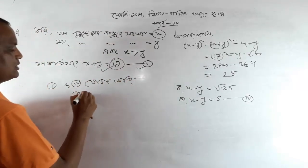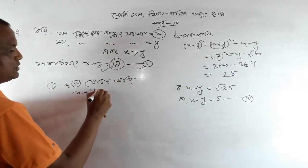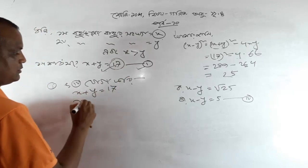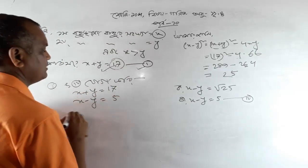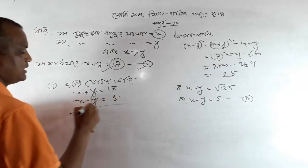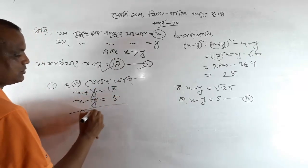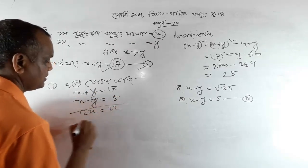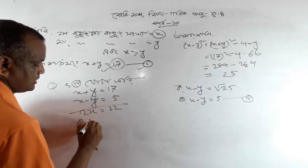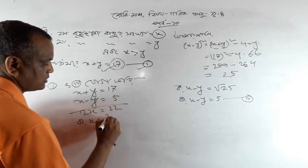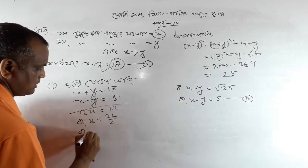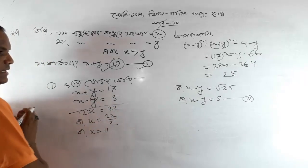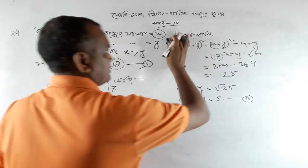The number of x plus y minus 5. I will cut the number of x minus y minus 5. Then x minus 2 is 1. I will cut the number of x minus 2. This is x minus 5. I will cut the number of x minus 1.